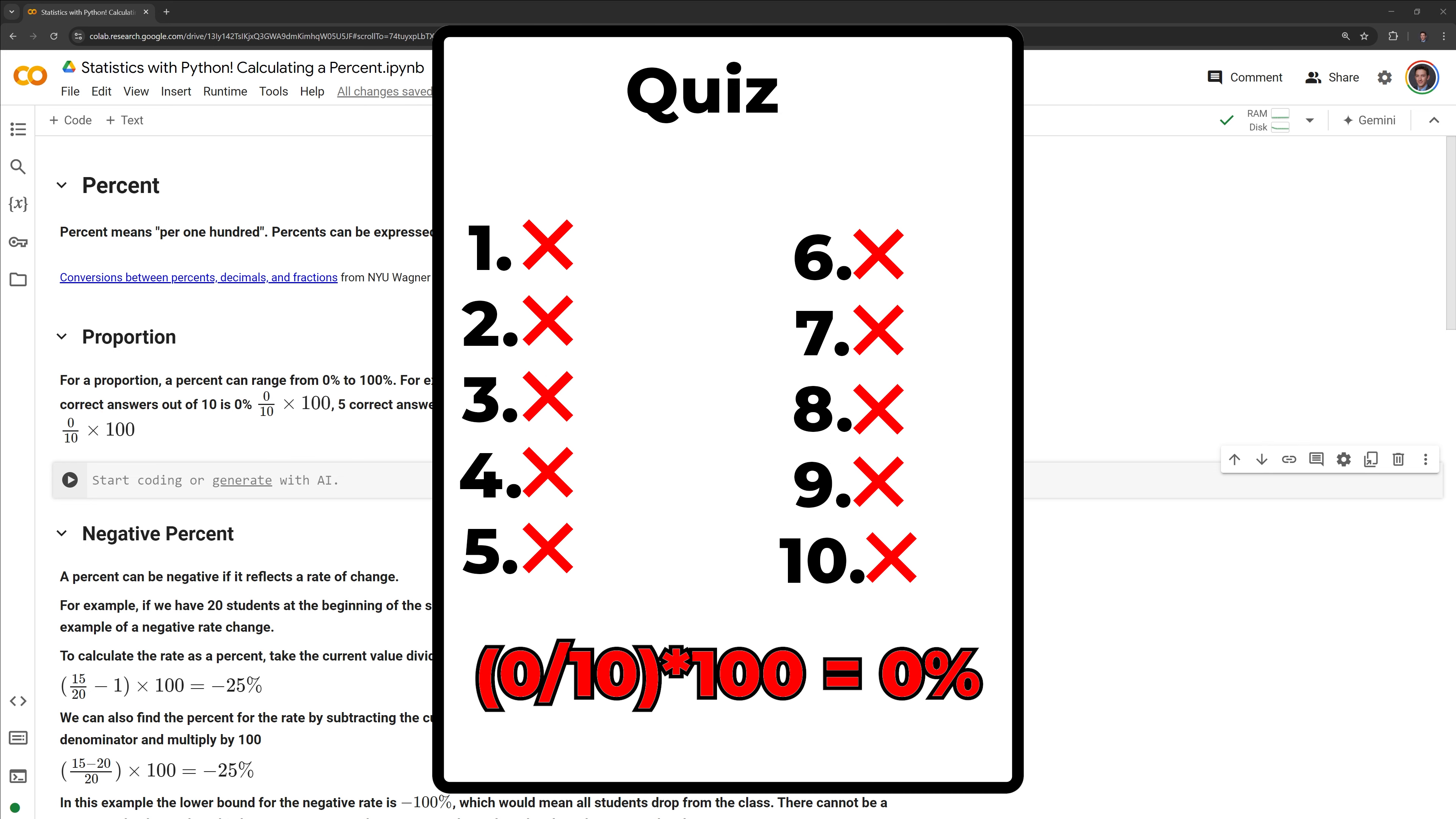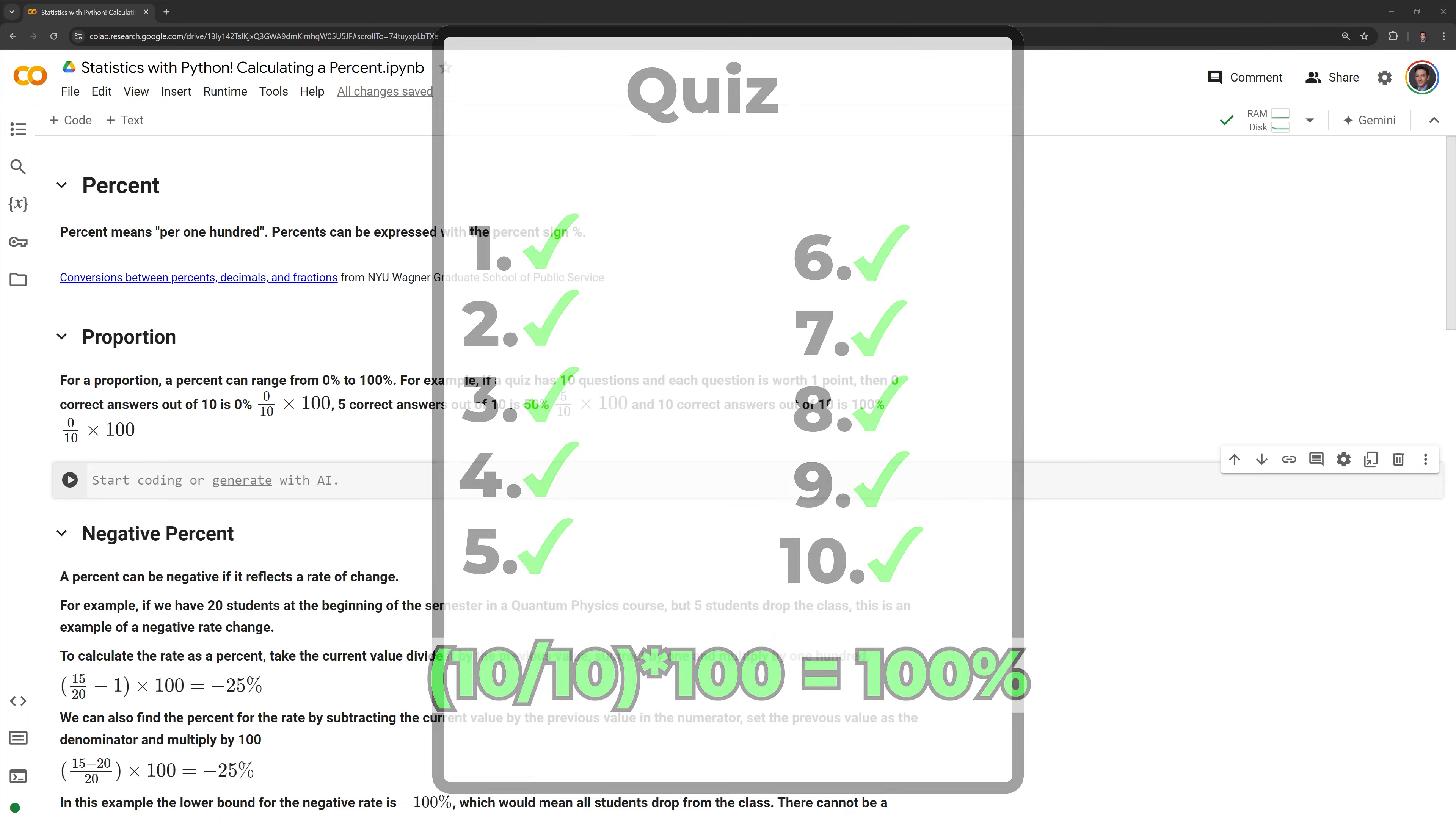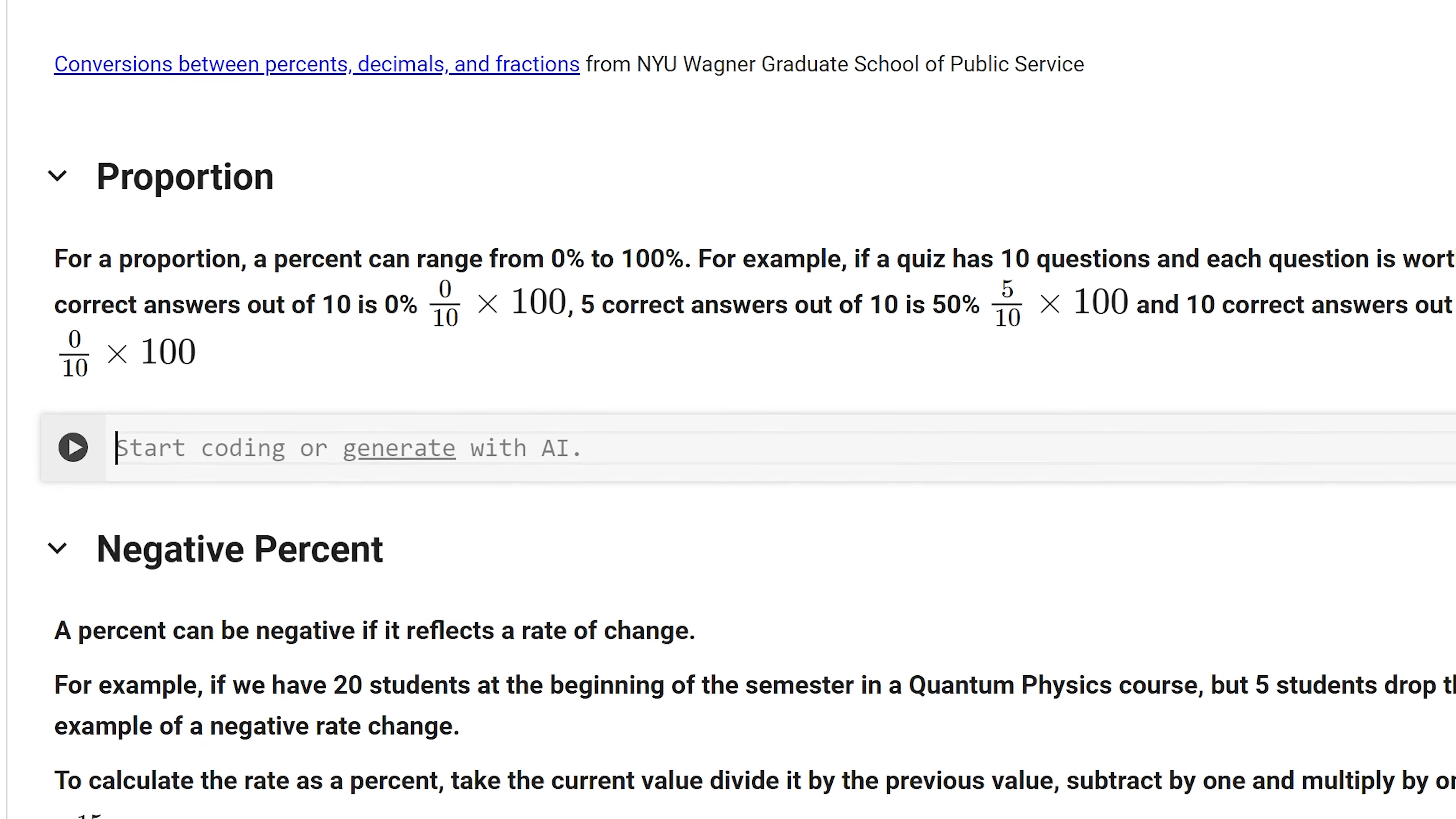For example, if a quiz has 10 questions and each question is worth 1 point, then 0 correct answers out of 10 is 0%, 5 correct answers out of 10 is 50%, and 10 correct answers out of 10 is 100%. Let us run these calculations within Python.